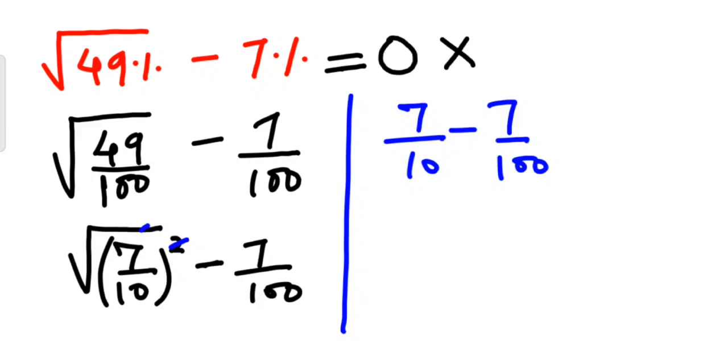Now, since the denominators are different, we need to make sure that the denominators come out to be same. So here, the denominator will be 100. And in order to make 10 as 100, we need to multiply it by 10 again.